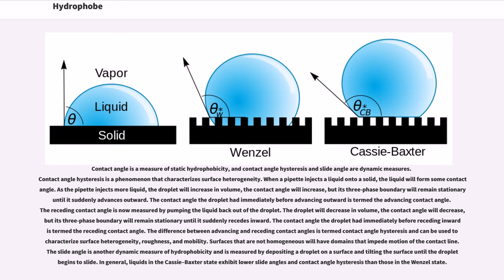The receding contact angle is now measured by pumping the liquid back out of the droplet. The droplet will decrease in volume, the contact angle will decrease, but its three-phase boundary will remain stationary until it suddenly recedes inward. The contact angle the droplet had immediately before receding inward is termed the receding contact angle. The difference between advancing and receding contact angles is termed contact angle hysteresis and can be used to characterize surface heterogeneity, roughness, and mobility.